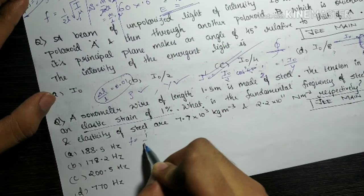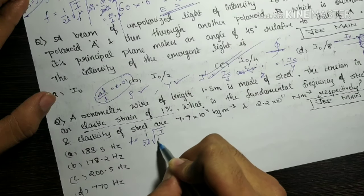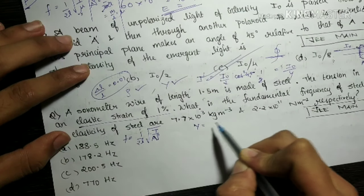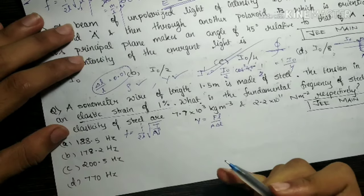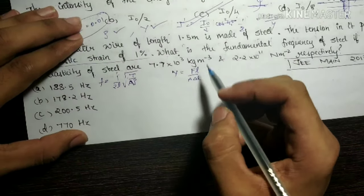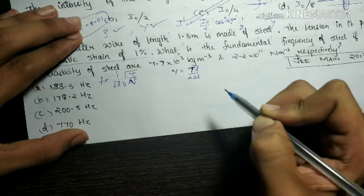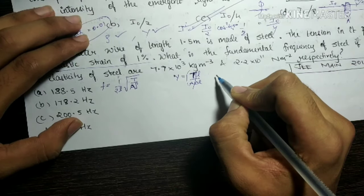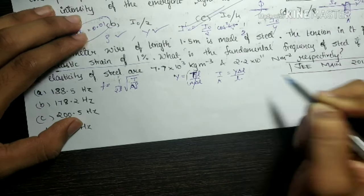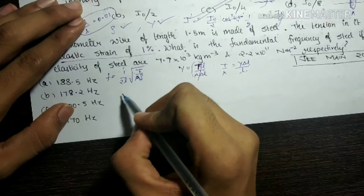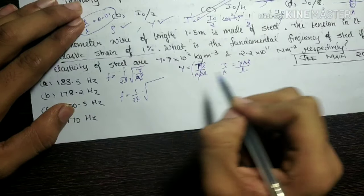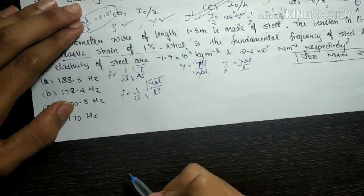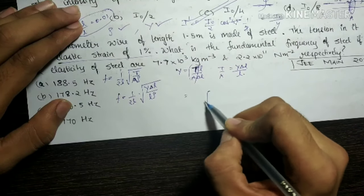So f = (1/2L)×√(T/(A×ρ)). Now we take the expression for Young's modulus: Y = TL/(A×ΔL), so T/A = Y×ΔL/L. Substituting this in, f = (1/2L)×√(Y×(ΔL/L)/ρ). All the values are now known — Y, ΔL/L, ρ, and L.